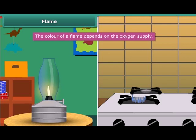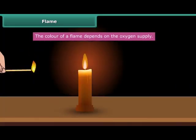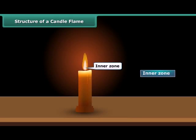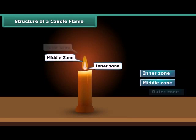Do you know how these flames are obtained? When we burn the candle with a matchstick, the heat of the matchstick melts and vaporizes wax, which rises through the wick and forms a flame. A candle flame can be divided into three regions: inner zone, middle zone, and outer zone.